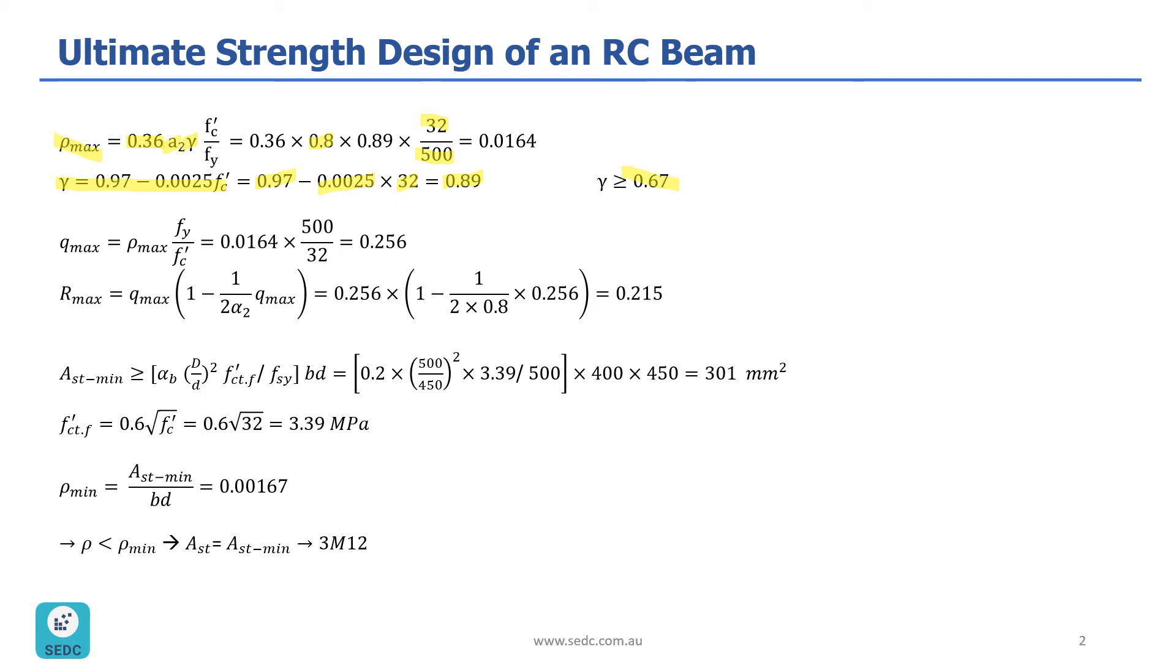Now, that we have Gamma, we can calculate our Rho max, which is going to be 0.0164.